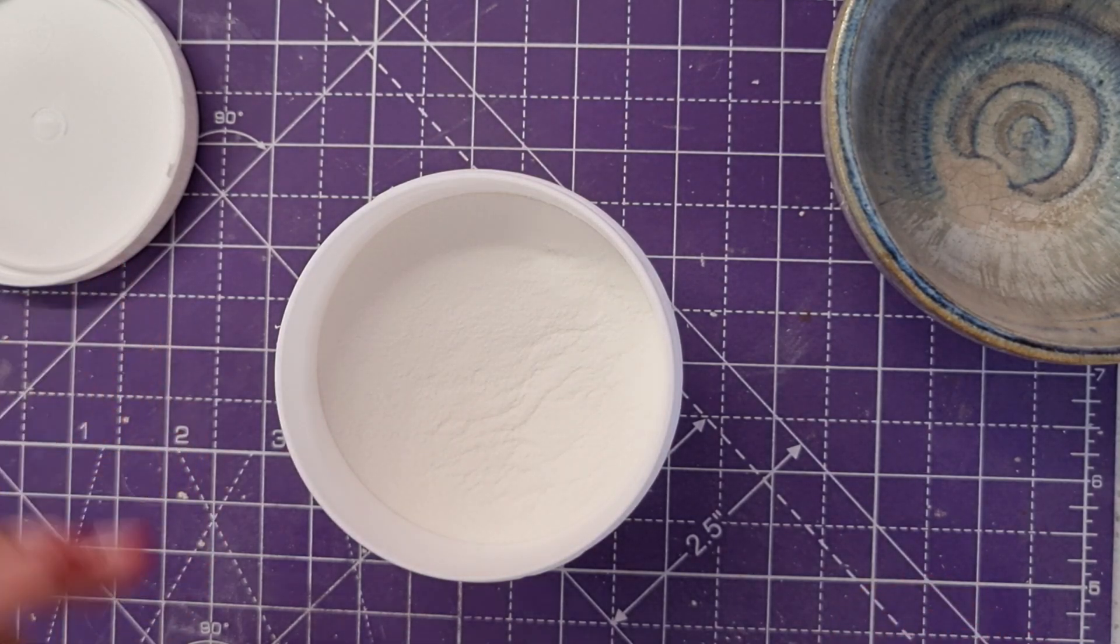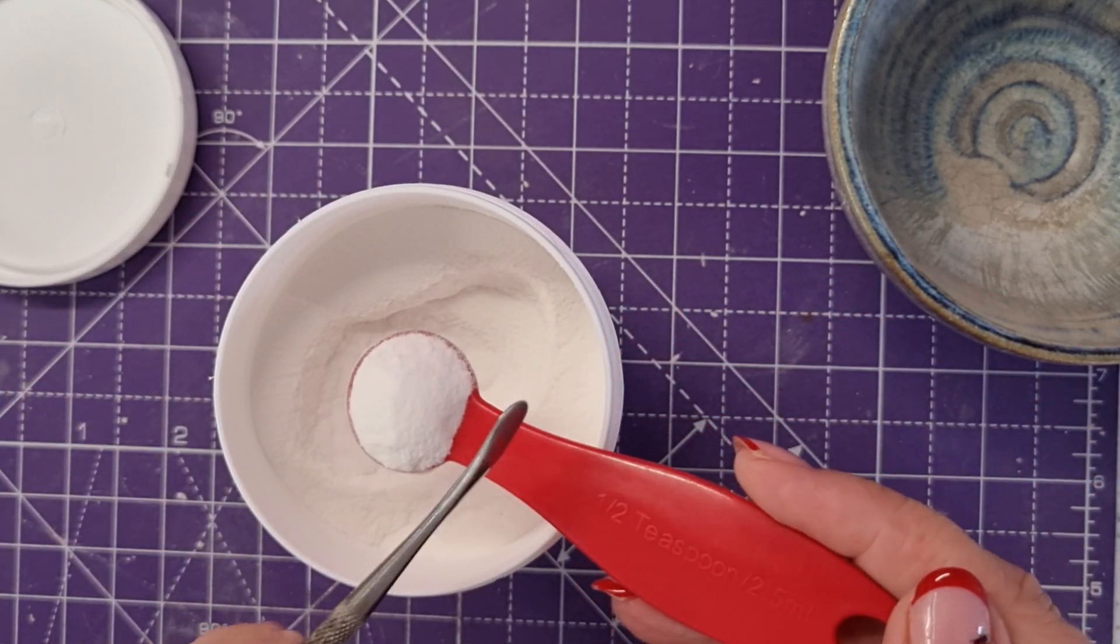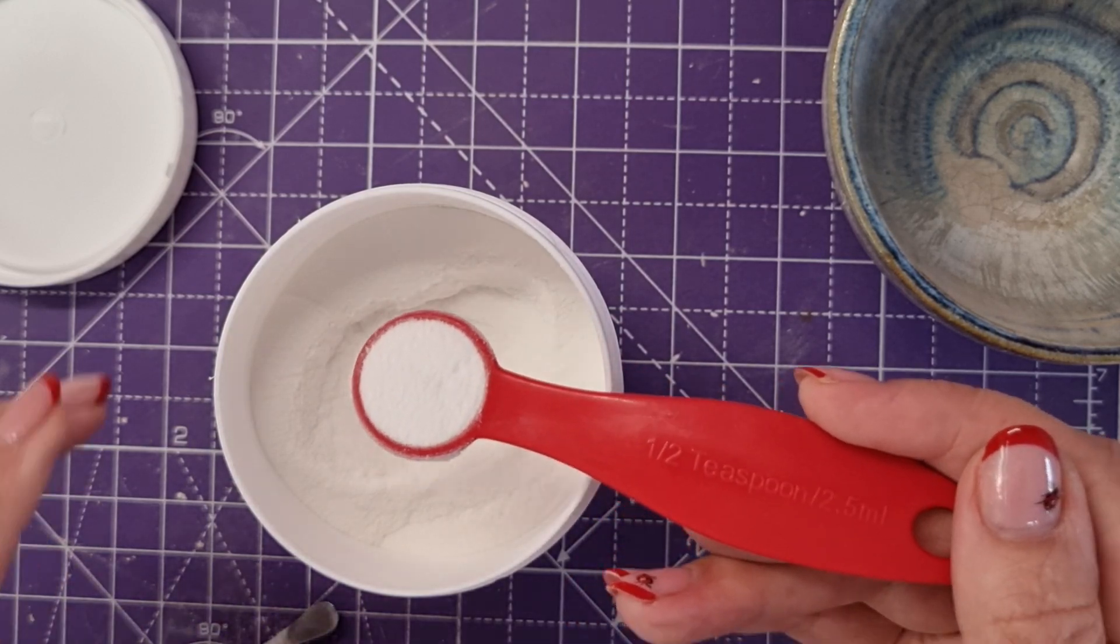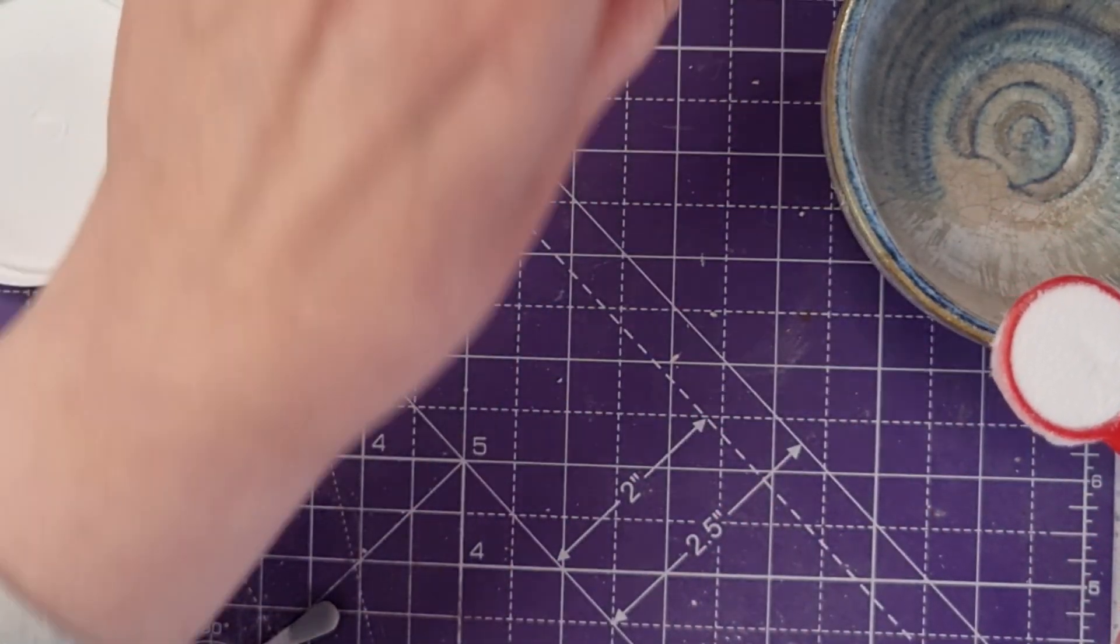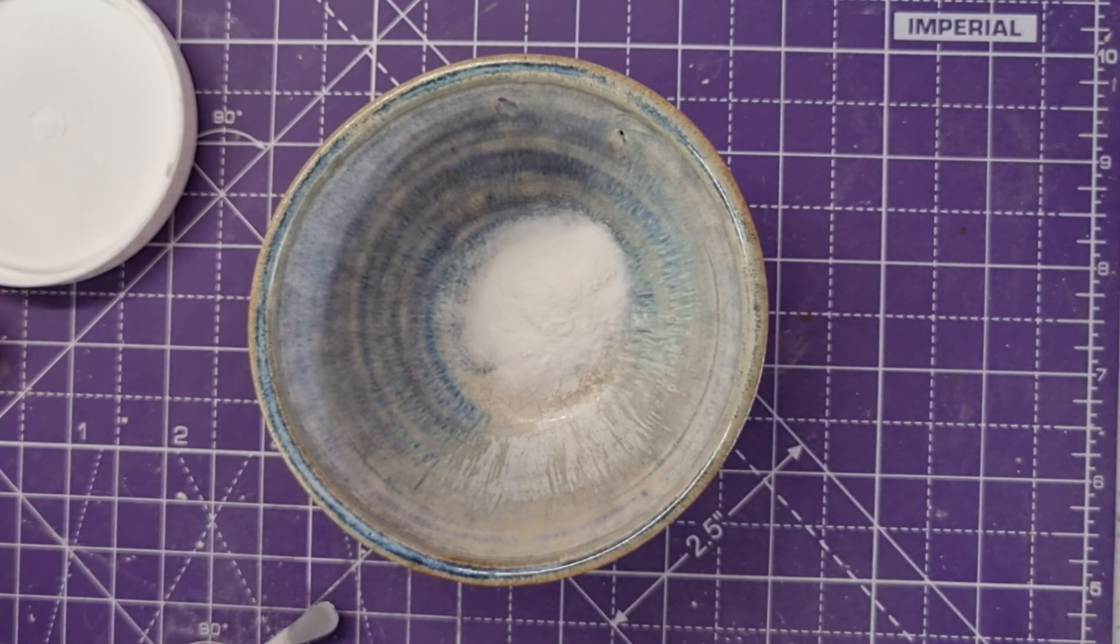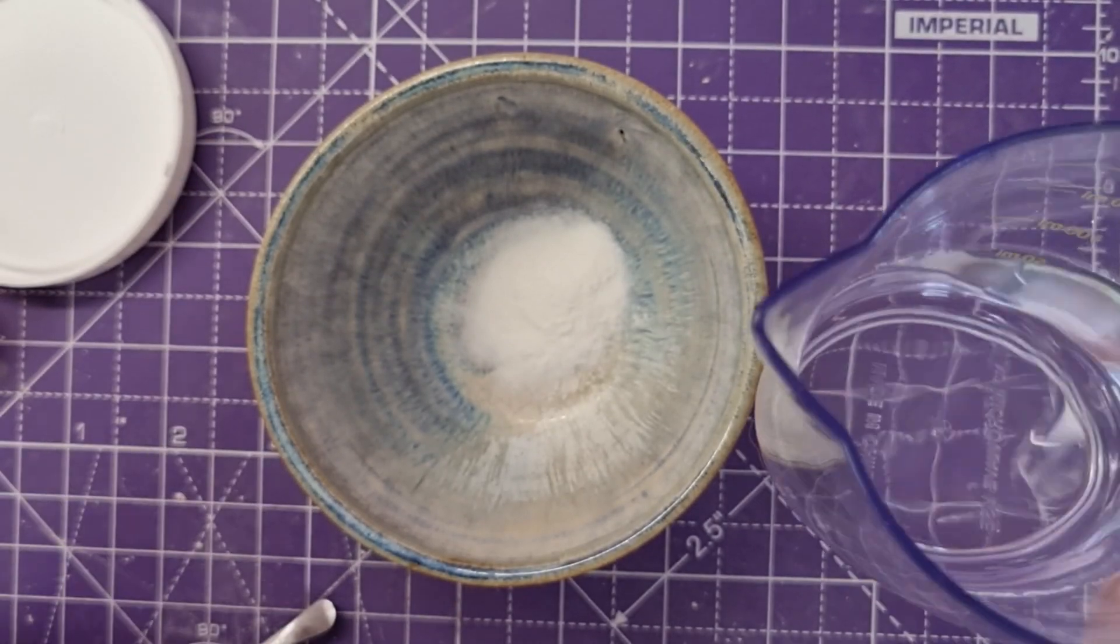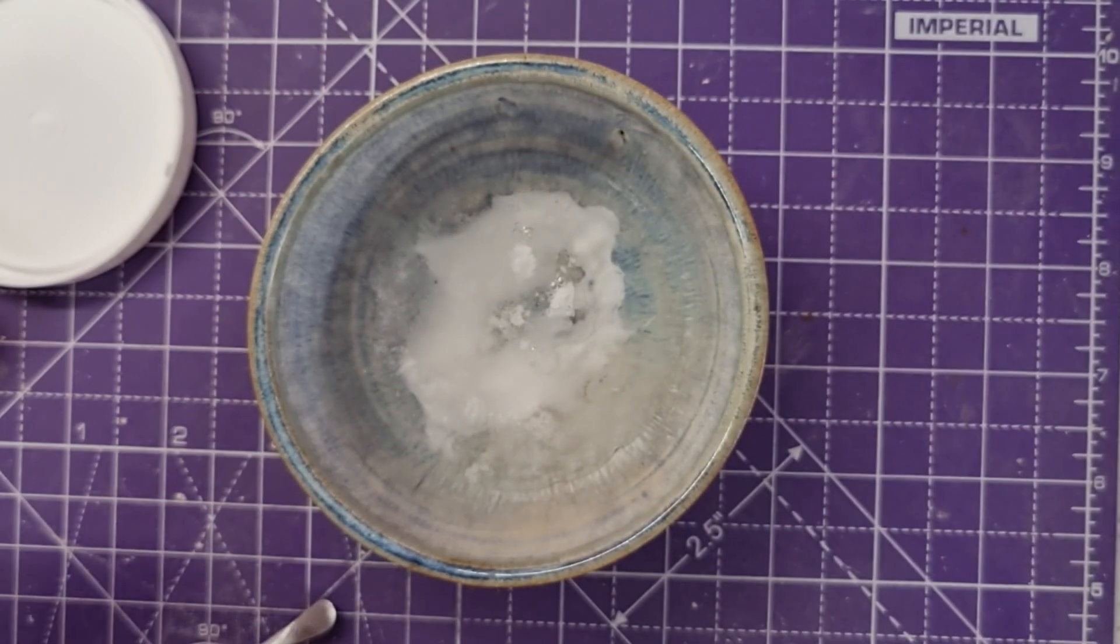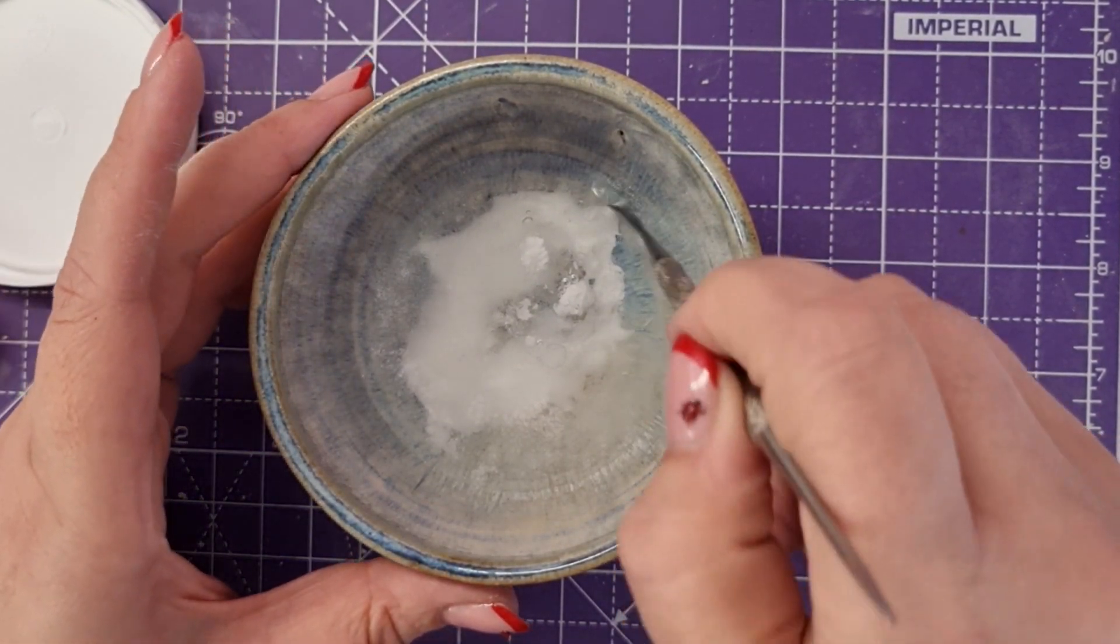I'm just going to take half a teaspoon, which is 2.5 ml of powder, and I'm going to pop it in this bowl here. Then I'm going to add 50 ml of water to the powder. It's warm water and I'm going to stir it.